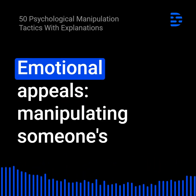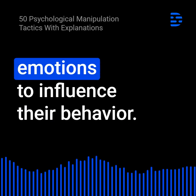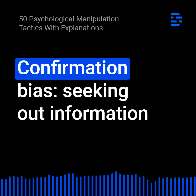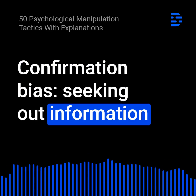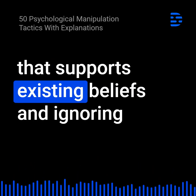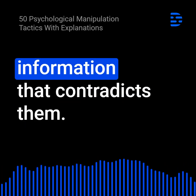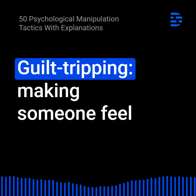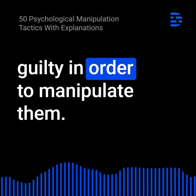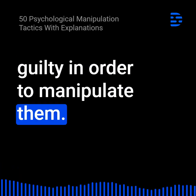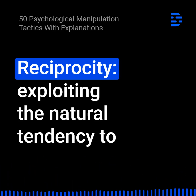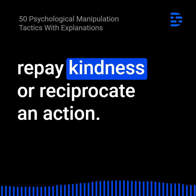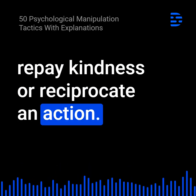7. Emotional appeals: Manipulating someone's emotions to influence their behavior. 8. Confirmation bias: Seeking out information that supports existing beliefs and ignoring information that contradicts them. 9. Guilt-tripping: Making someone feel guilty in order to manipulate them. 10. Reciprocity: Exploiting the natural tendency to repay kindness or reciprocate an action.